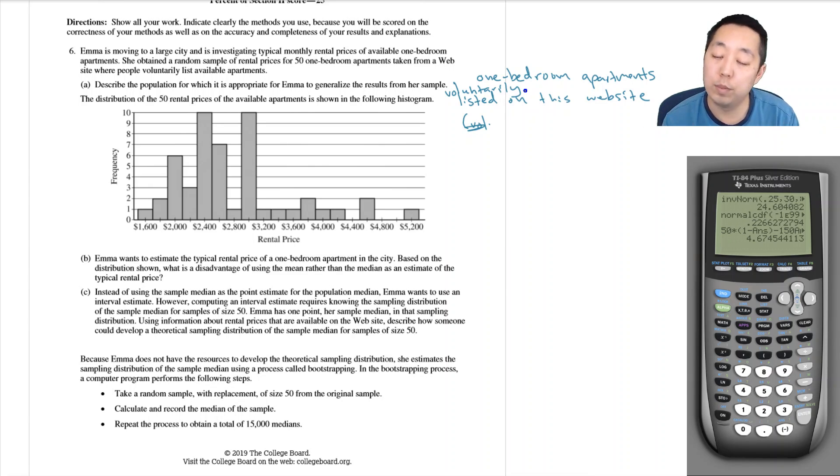She's grabbing from one bedroom apartments from this list, not one bedroom apartments of the entire city. It doesn't include the ones that aren't voluntarily listed. You want to be very specific here - it is only the one bedroom apartments that were voluntarily listed on this particular website. That's the only generalization she can make about it.